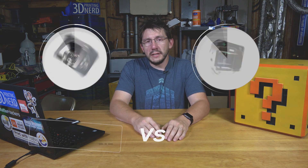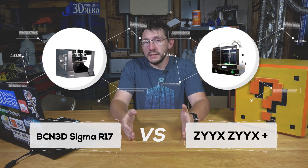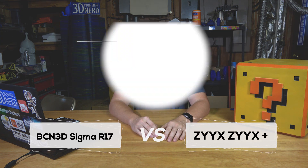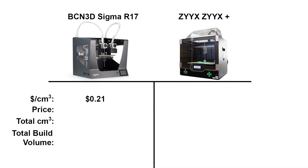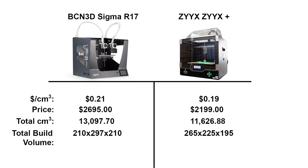We have our theory — the price per cubic centimeter is a way to initially compare 3D printers. Now let's put it to the test. Let's talk about the BCN3D Sigma R17 versus the Zix Plus 3D printer. The Sigma is 21 cents per cubic centimeter and the Zix is 19 cents per cubic centimeter. The Sigma itself has a price tag nearly $500 more than the Zix, but it also has nearly 1,500 cubic centimeters more in its build volume.